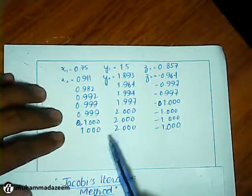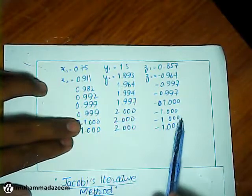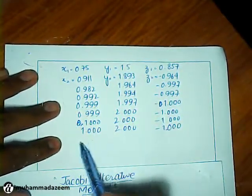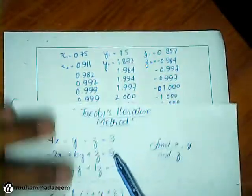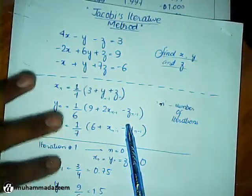Like we have here, this converging, converging, converging, and finally we get to this point. This is how Jacobi's iterative method converges. Thank you for watching.